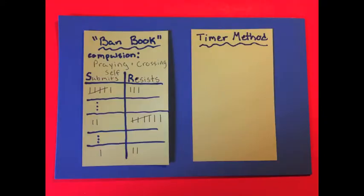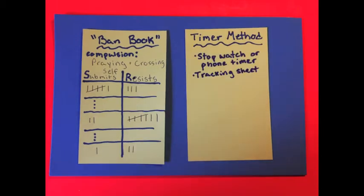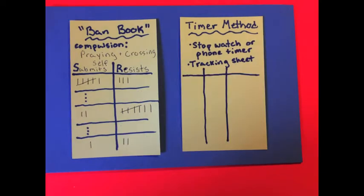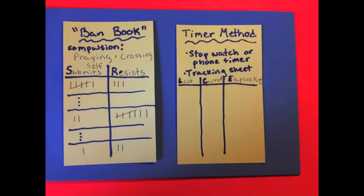A second way to track compulsions is using a timer. For this, you'll need a stopwatch or a phone timer, and just another index card size piece of paper or a book that is going to be your tracking sheet. Now, my chart is going to have three columns so that I can show you exactly how we're coming up with the final numbers. Once you get the hang of this, if you just want to use the final column, that's okay. I've labeled the columns last for the previous time I've done a compulsion, current for the most recent time I've done a compulsion, and elapsed time for in-between.